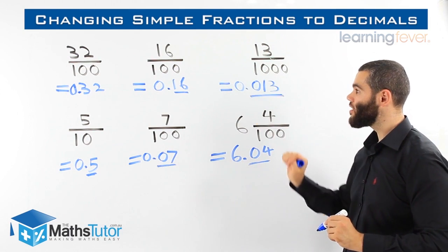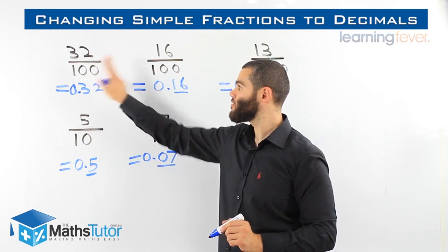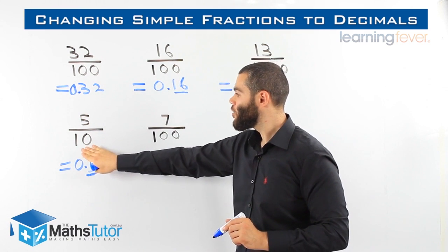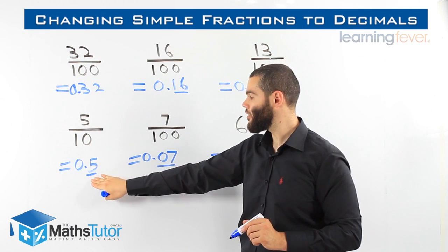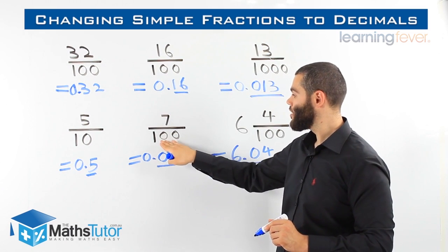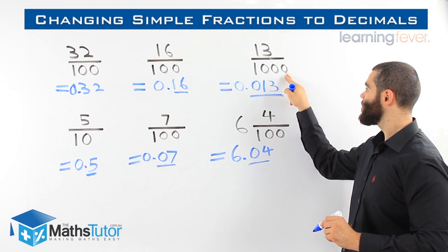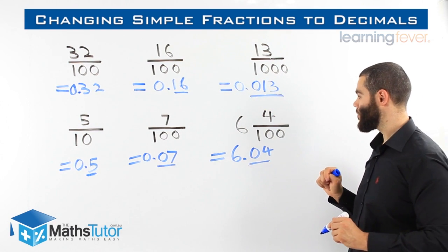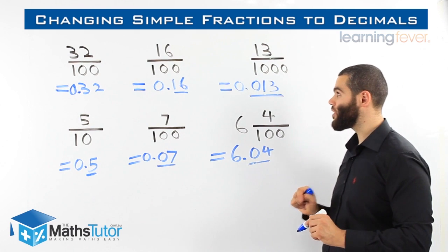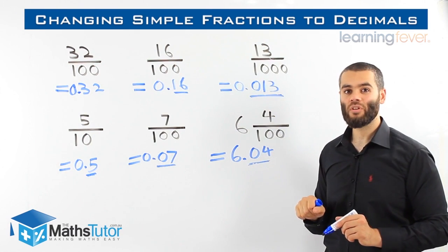So as you can see throughout all of them, we look for how many zeros are in the denominator. Out of 100 means two numbers go behind the decimal point. Out of 10, one zero means one number goes behind. Two zeros, two numbers after the point. Three zeros, three numbers behind the point. Two zeros, two numbers behind the decimal point. Quick way to change from fractions to decimals. Thank you.